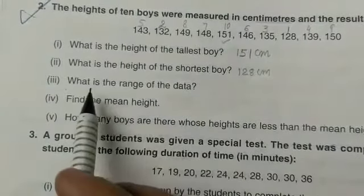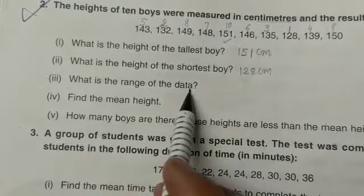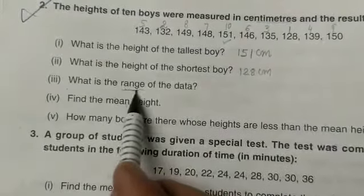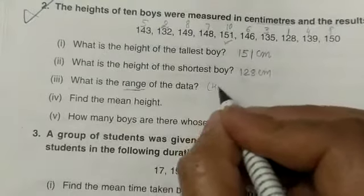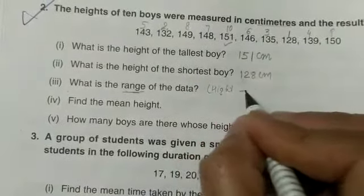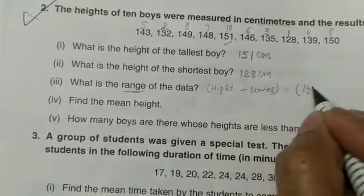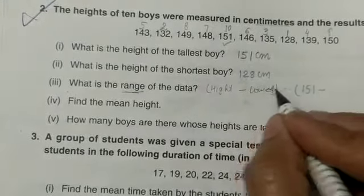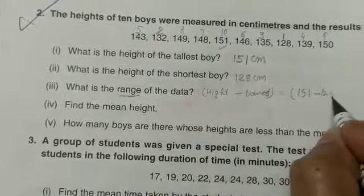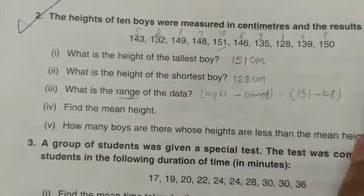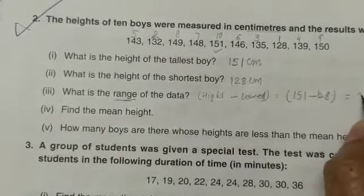After that, what is the range of the data? You learned how to find the range - highest value minus lowest value. That is 151 minus 128. When you subtract, you will get 23. So this is the range of the data.